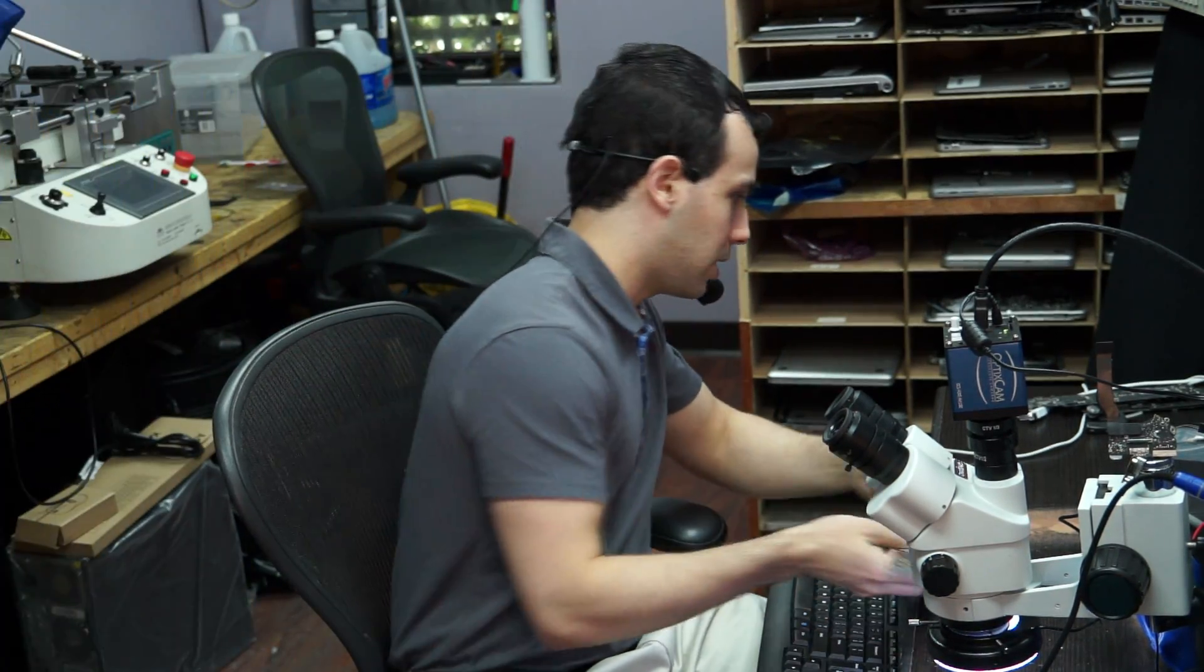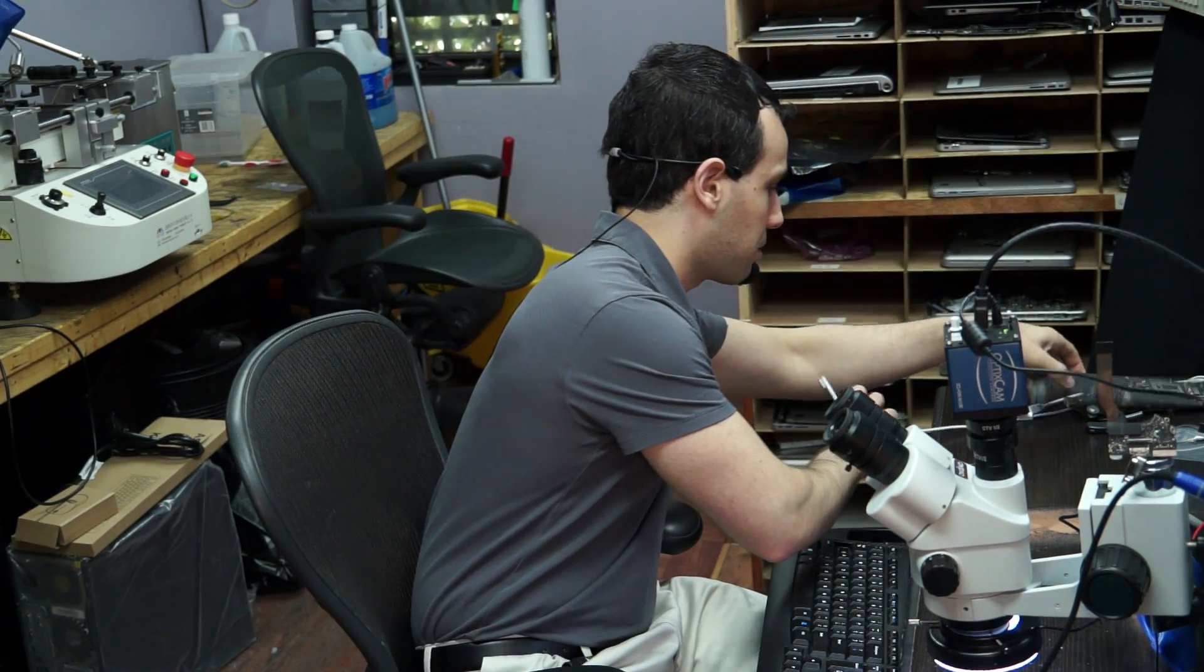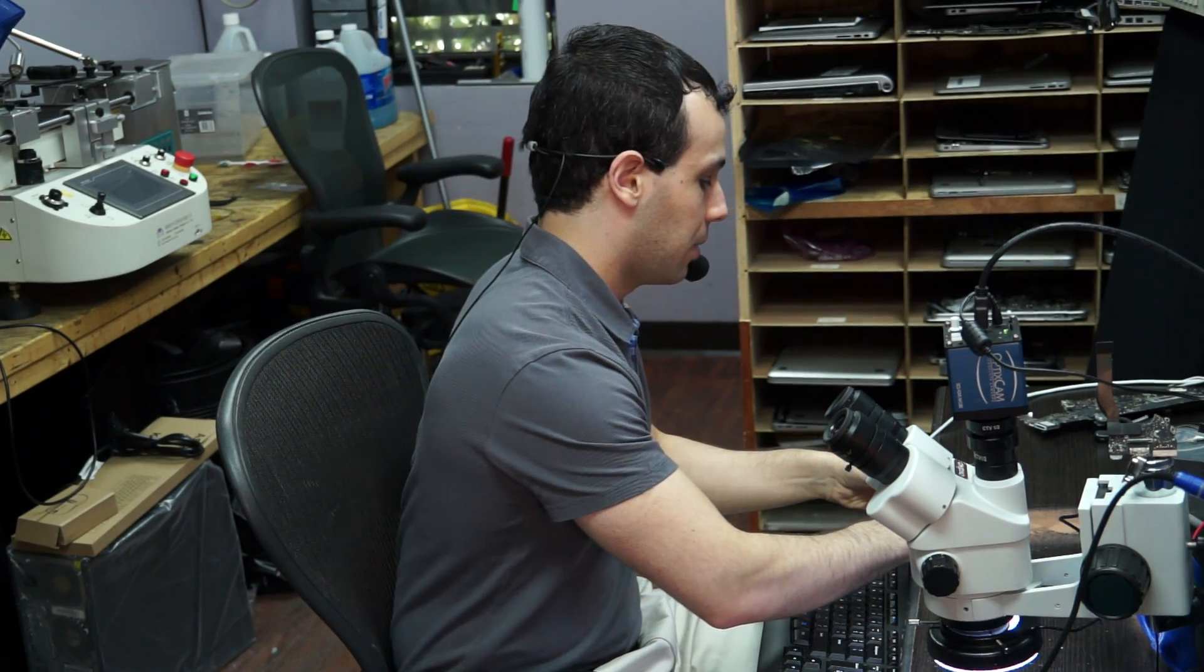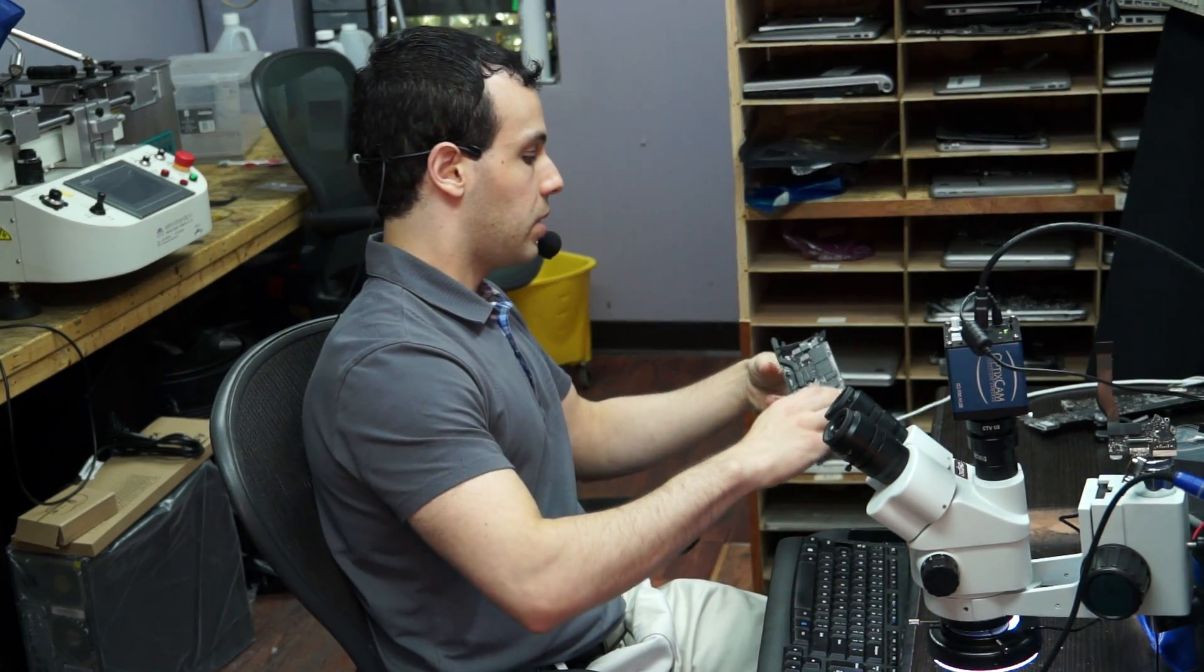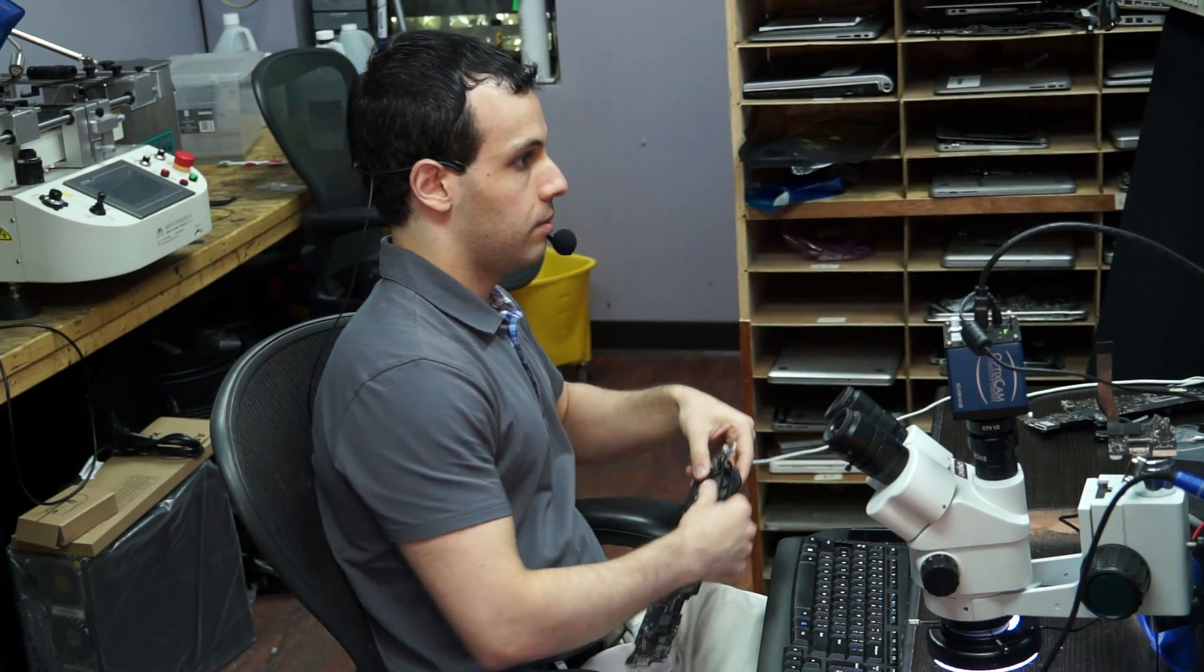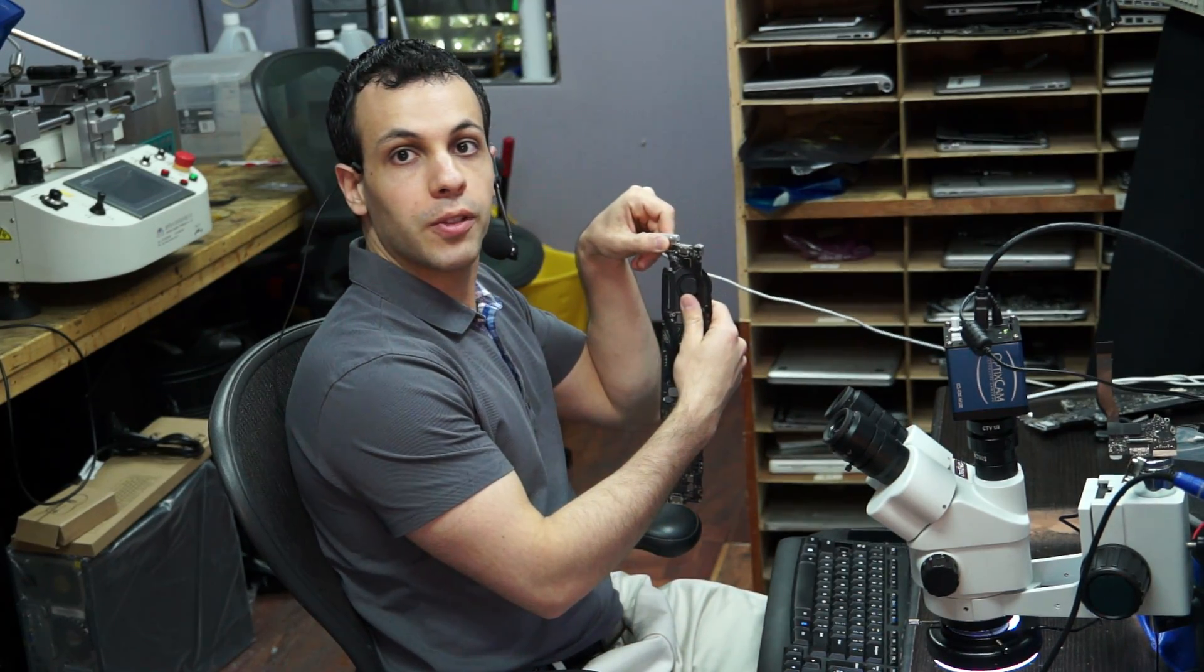Alright, so today we're going to be working on an 820-3024 board that doesn't turn on. Remember these are the Core i5-i7 series boards that are supposed to turn on automatically. When you plug the charger in on this one, you do get a green light but there is no fan spinning.